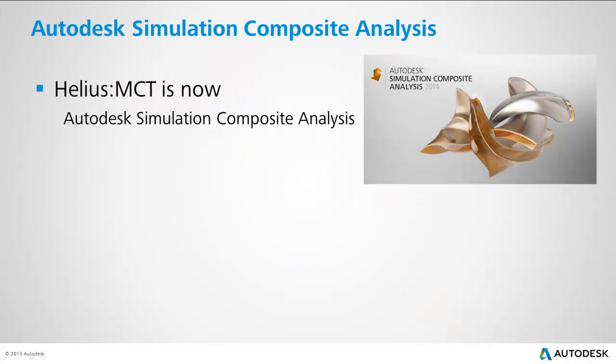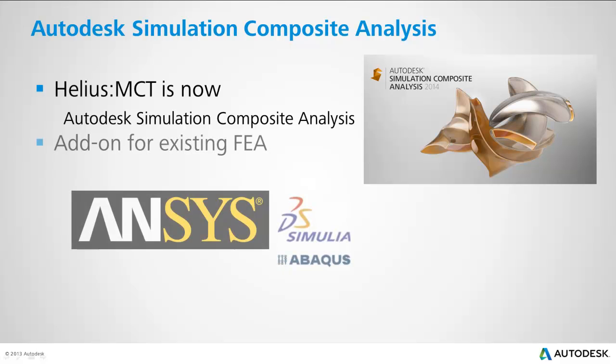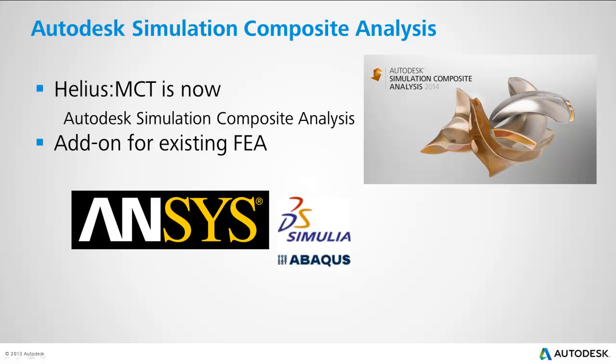Before continuing with a description of the new features, I would like to take a minute to introduce the audience to the new Helios MCT and the current capabilities of the software. Helios MCT is now Autodesk Simulation Composite Analysis. The product is an add-on to existing FEA packages, such as Abaqus and Ansys, as a new material definition specifically designed to handle the complexities of progressive failure analyses using composite materials.